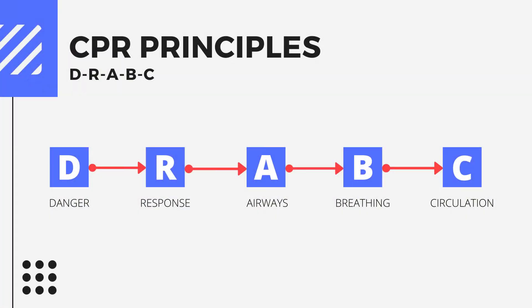CPR principles: D, R, A, B, C. D is for Danger. R is Response. A is Airways. B is Breathing. And C is Circulation.